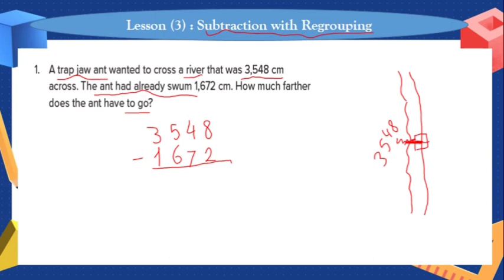So we can do the subtraction. 8 minus 2: counting up after 2 — 3, 4, 5, 6, 7, 8 — we get 6. Count on fingers. Next step.